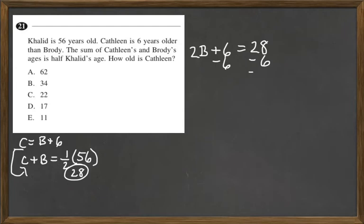and now we have 2B equals 22. Divide by 2 on each side, and B equals 11.